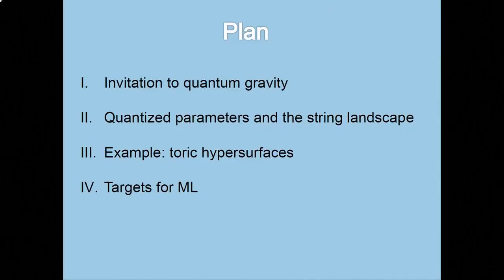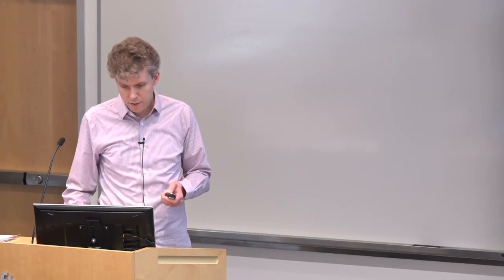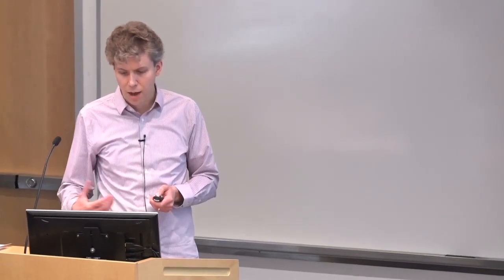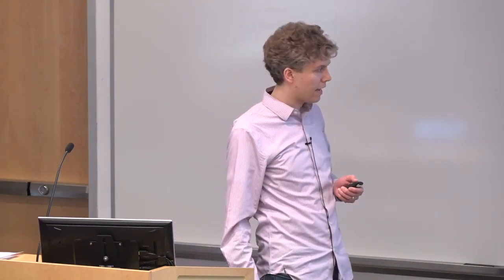So I'll start with a gentle and brief invitation to quantum gravity. I'll explain why parameters are quantized in quantum gravity. I'll define what I mean by the string landscape. Then after those generalities, I'll go into one class of examples of compactifications of string theory on hypersurfaces in Toric spaces. This is a particularly useful combinatorial problem that illustrates some of the main problems we face in the landscape. Then I'll close with some targets for machine learning.